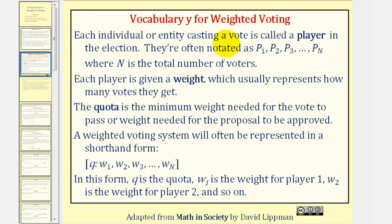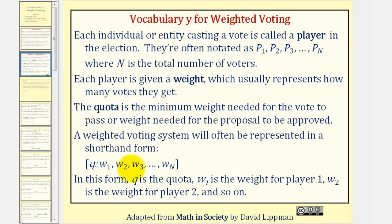Each individual or entity casting a vote is called a player in the election. They're often notated as P sub one, P sub two, through P sub n, where n is the total number of voters. Each player is given a weight, which usually represents how many votes they get. The quota is the minimum weight needed for the vote to pass, or the weight needed for the proposal to be approved. A weighted voting system will often be represented in shorthand form, where Q is the quota, W sub one is the weight of player one, W sub two is the weight of player two, and so on.